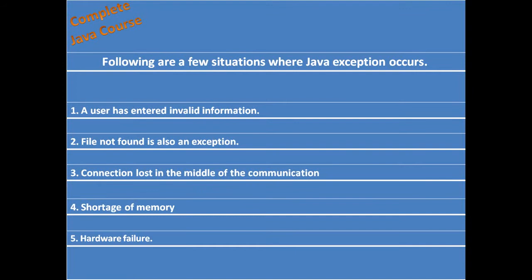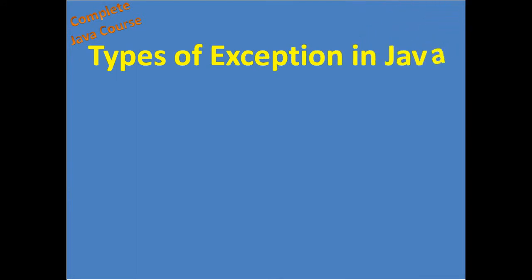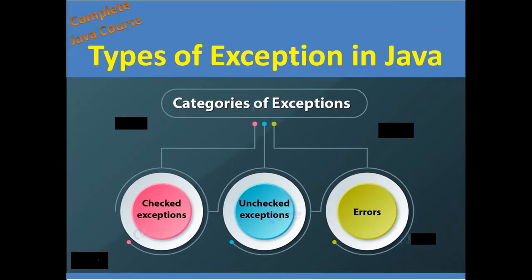Number 4: Shortage of memory. Suppose you are running a program and meanwhile your program requires more memory and is not able to execute in the memory provided by the operating system, then also an exception can occur. Number 5: Hardware failure. Because of hardware failure, there is also a situation when an exception can occur. Types of exception in Java.